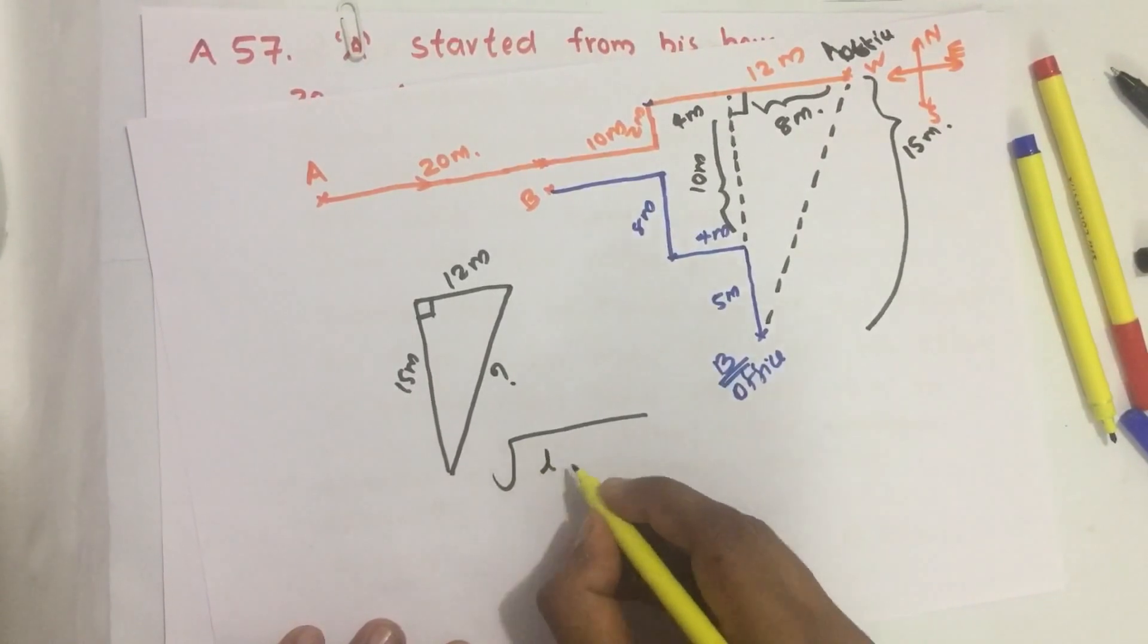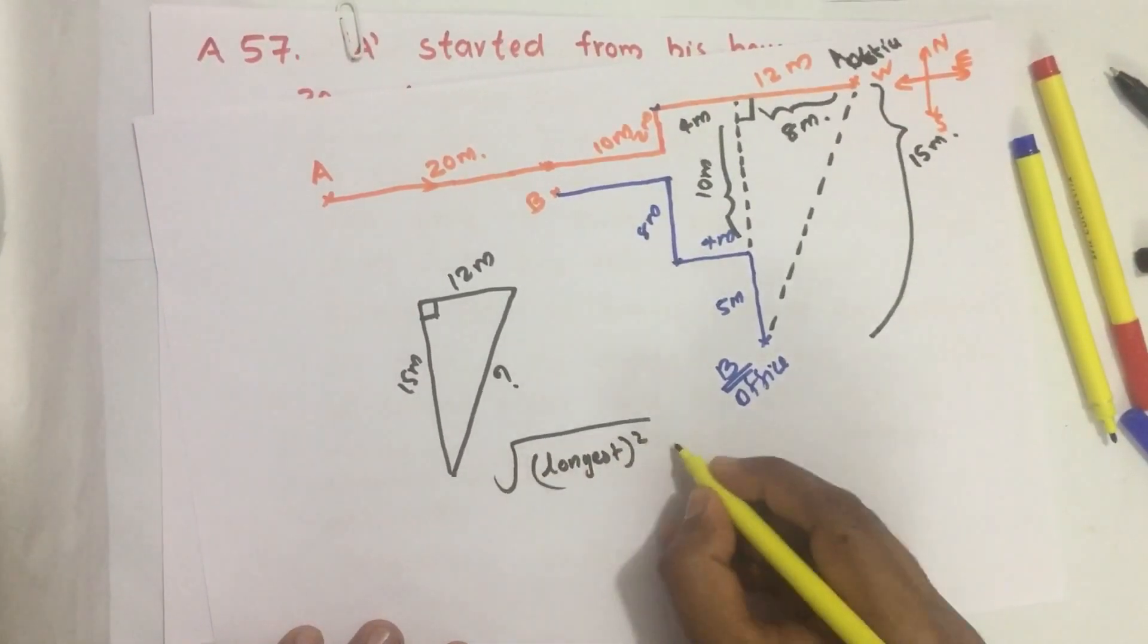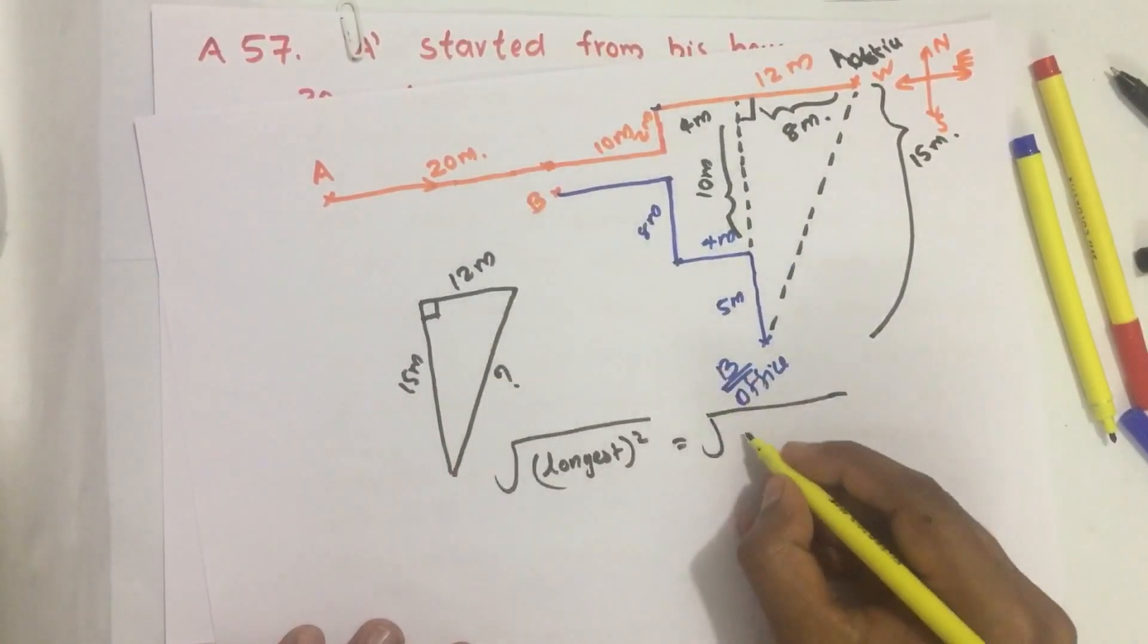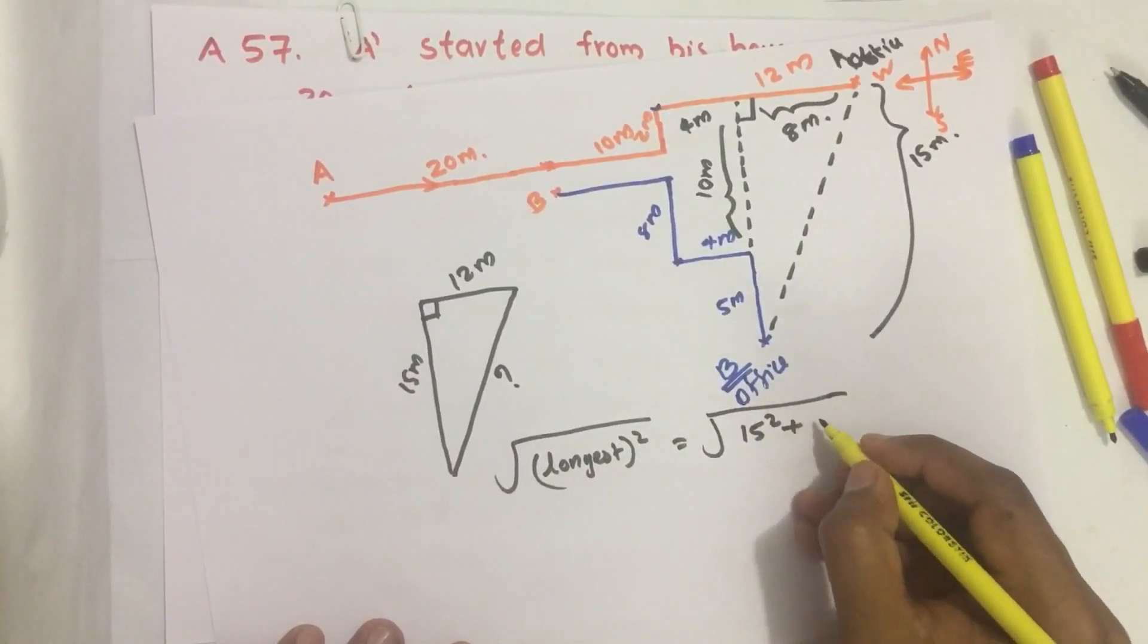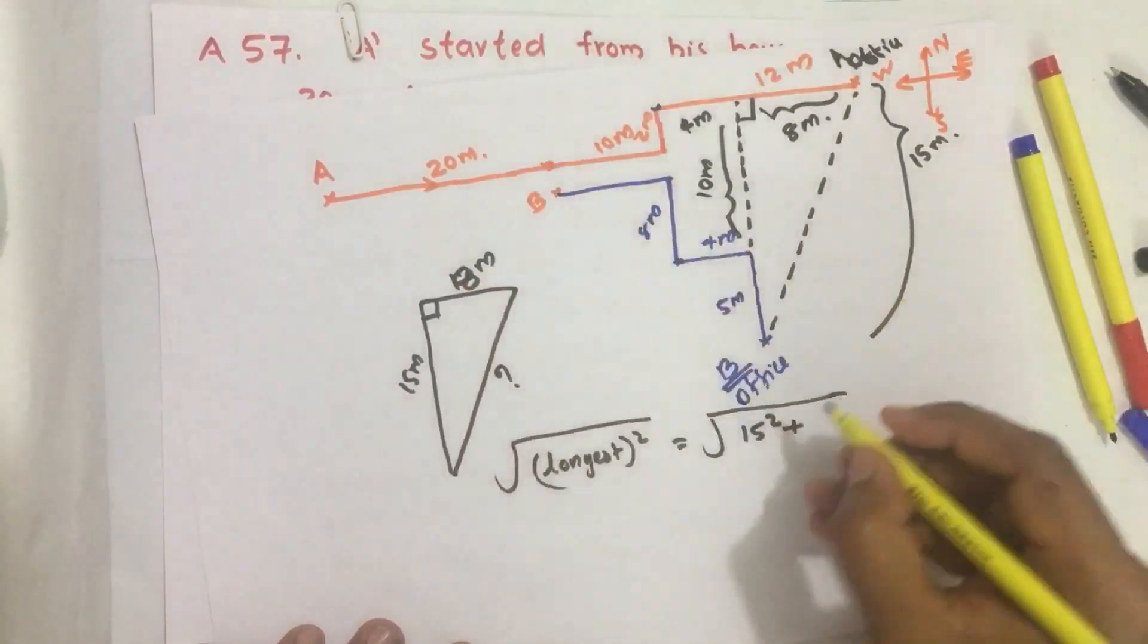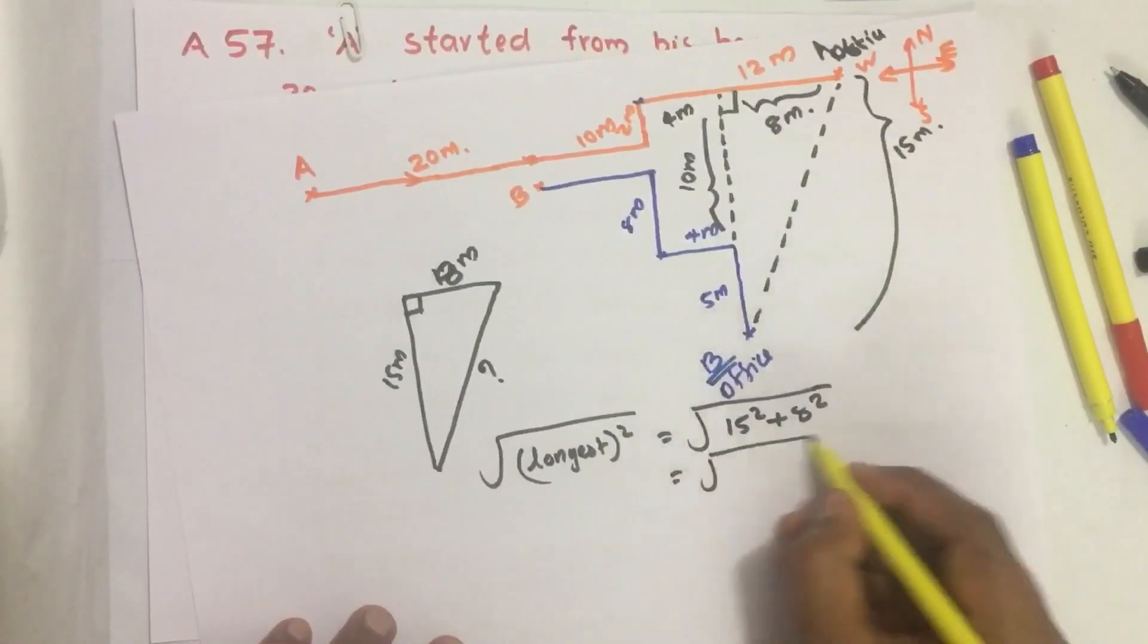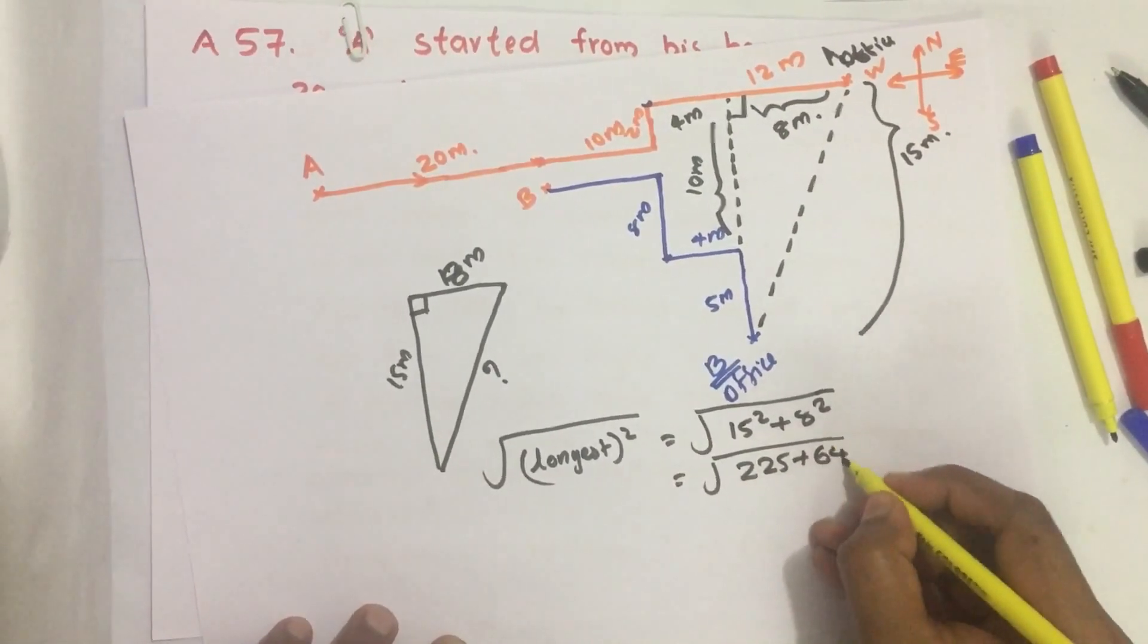The square root of longest side squared equals square root of sum of the other two sides. Here it is 15 squared plus this is 8 meters, 8 squared. So we get 15 squared is 225 plus 8 squared is 64.